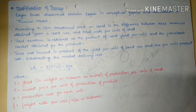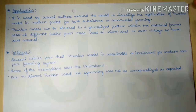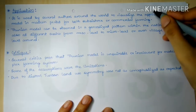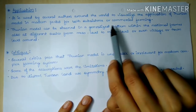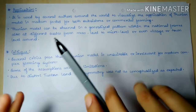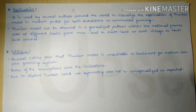The Von Thünen model has several applications. It was used by several authors for visualizing subsistence and commercial farming practices and the distribution pattern of agricultural produce. The Von Thünian model can be observed in a generalized pattern within the national framework, and also at different scales — from meso level to micro level, and even at the village or town level — demonstrating the model's flexibility.